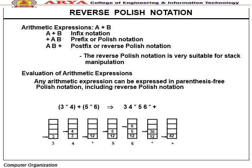Reverse Polish Notation (RPN): An arithmetic expression A + B is infix notation; + A B is prefix or Polish notation; A B + is postfix or Reverse Polish Notation. RPN is very suitable for stack-based evaluation. Any arithmetic expression can be expressed in parenthesis-free Polish notation, including Reverse Polish Notation.